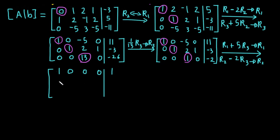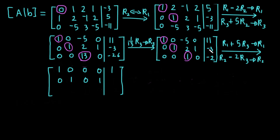Row 2 stays the same for leading entries: 0, 1, 1 minus 2×1 = 0... let me check: 1 minus 2 = -1... adjusted: we get 0, 1, 0, 1. For the augmented part of row 1: 11 + 5×(-2) = 11 - 10 = 1. For row 2 augmented: -3 minus 2×(-2) = -3 + 4 = 1. The last row remains [0, 0, 1, 0 | -2]. Now we have leading 1s in all rows.